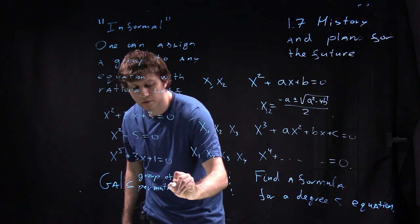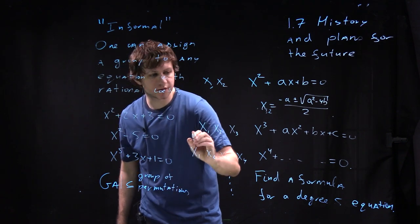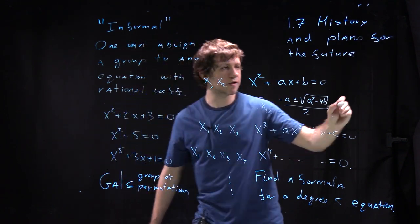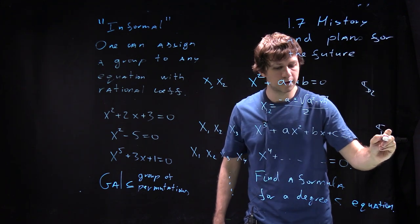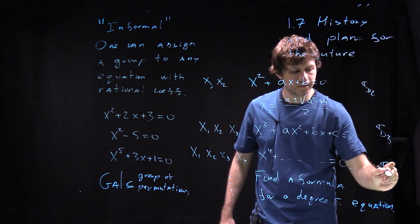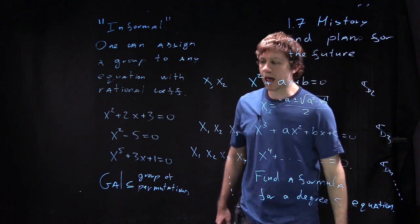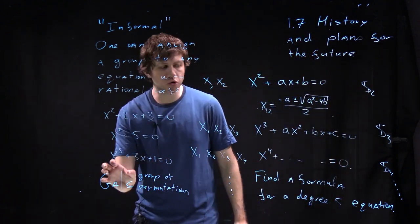So that's a subgroup of a group of permutations. So the symmetric group. And depending on the degree of equation it will be S2 or maybe S3, S4 and so on.